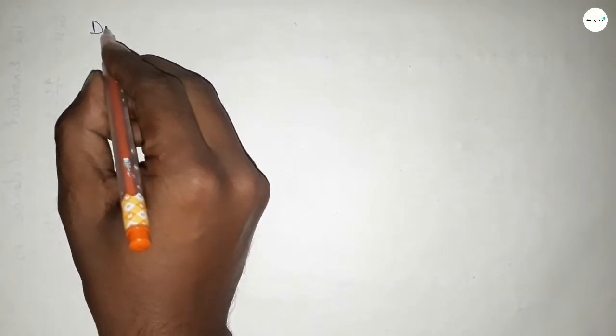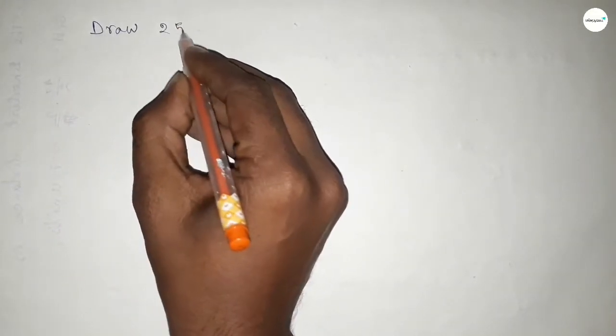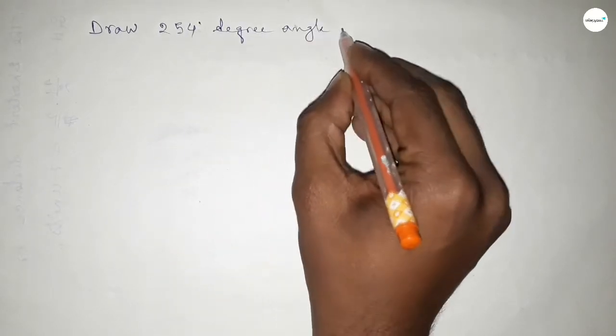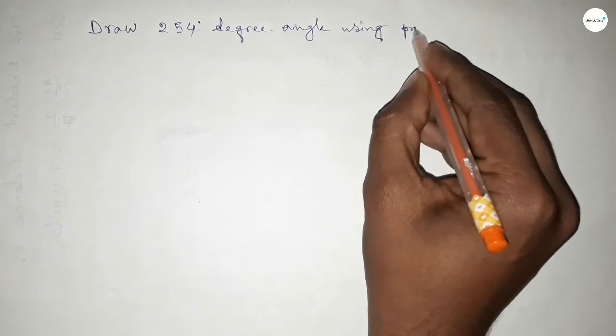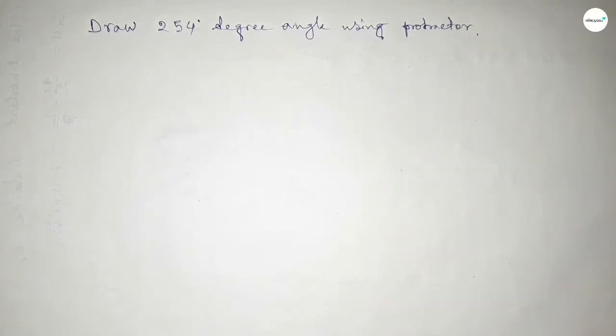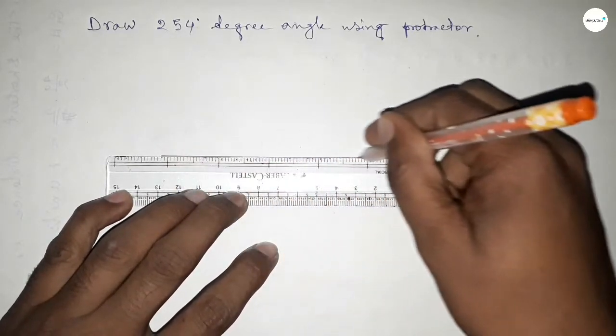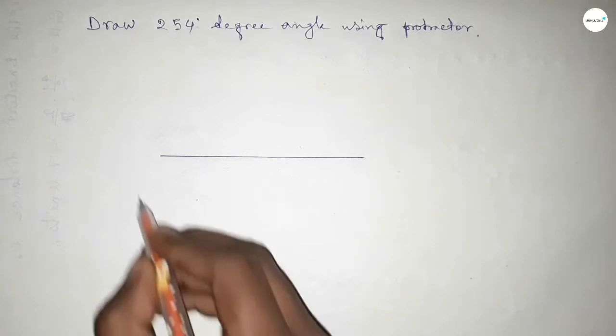Hi everyone, welcome to SSR Classes. Today in this video we have to draw a 254 degree angle by using a protractor. So let's start the video. First of all, we have to draw here a straight line of any length.